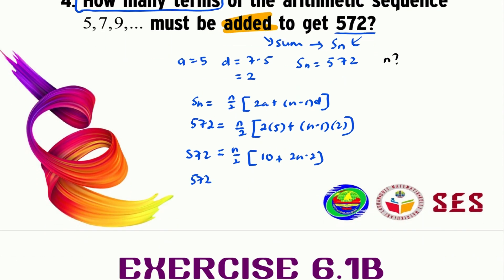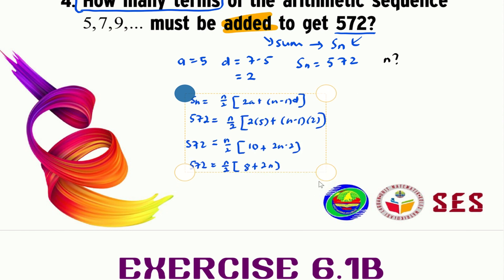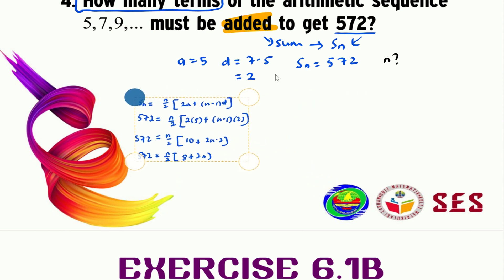What we have here is 572 equals n over 2, we have 8 plus 2n. I'm going to make this a little bit smaller so that we can have more space now.